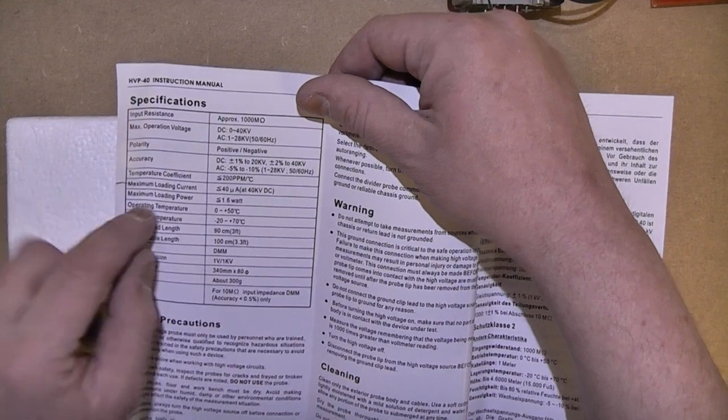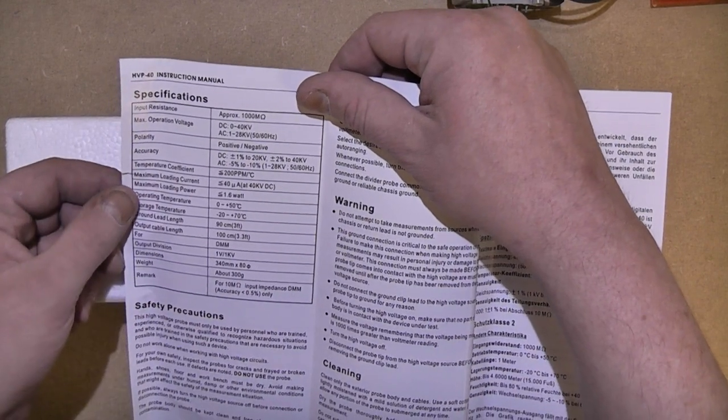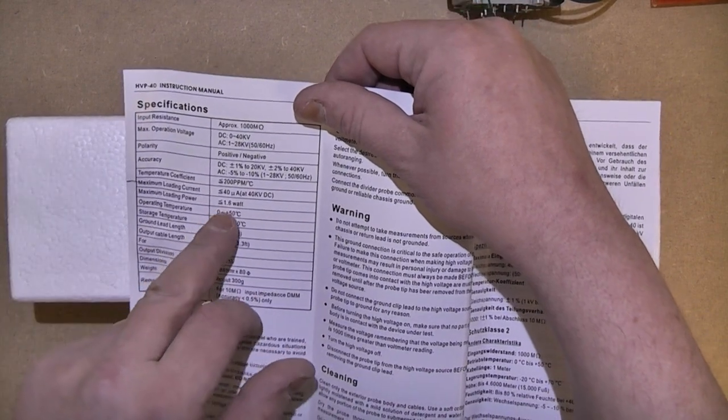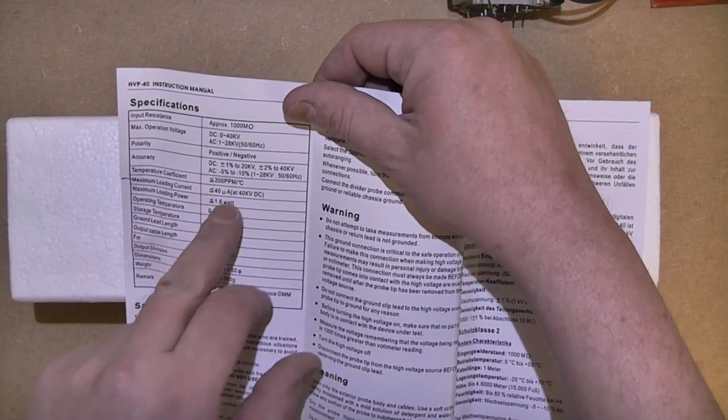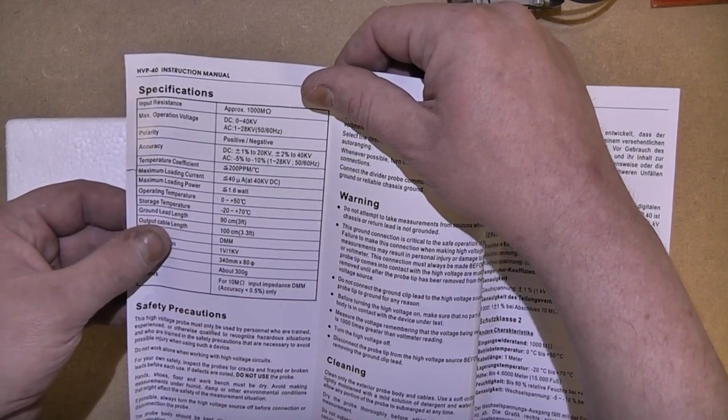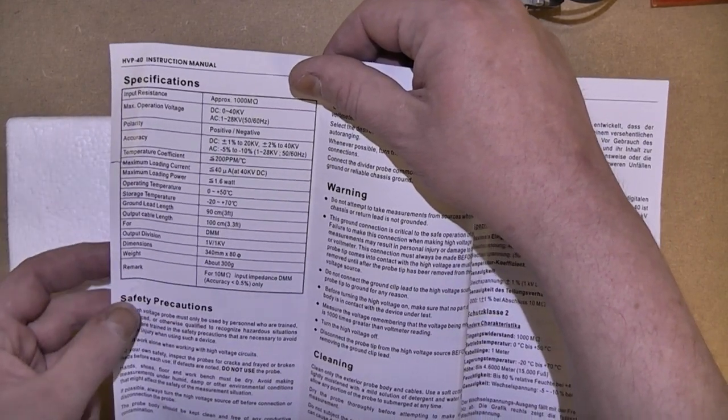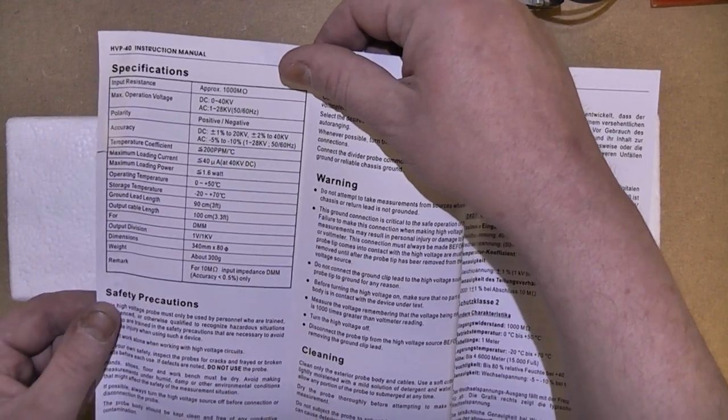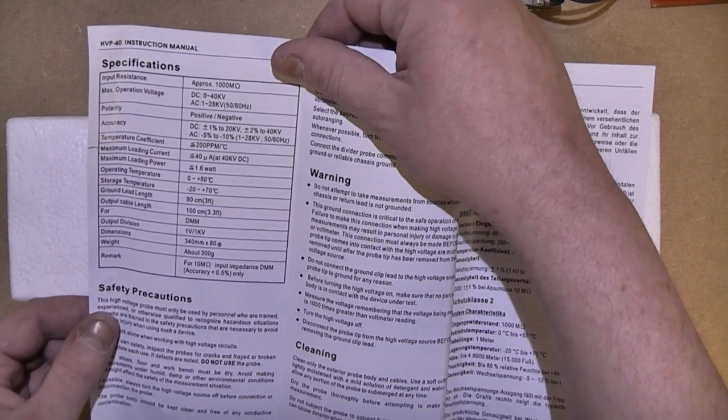Temperature, maximum loading current 40 microamps. That's not a lot but obviously because it's such a high voltage times that, you know 1.6 watts is maximum loading power. Ground lead length and 1 volt per 1000 volts, weight about 300 grams.